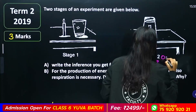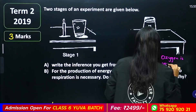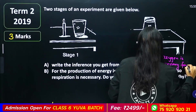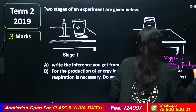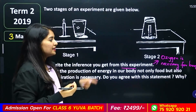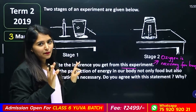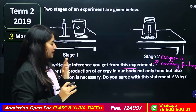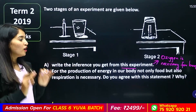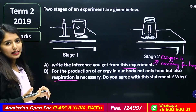Oxygen is necessary for burning. Okay, we need oxygen in the room for the production of energy in our body. Not only food, but also respiration is necessary. Do you agree with this statement?